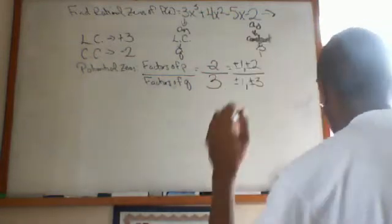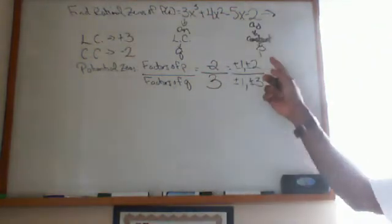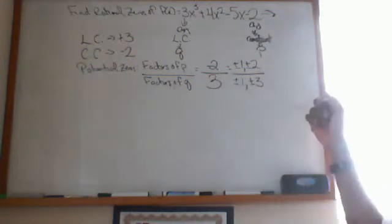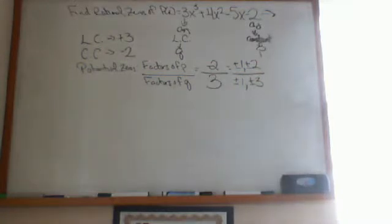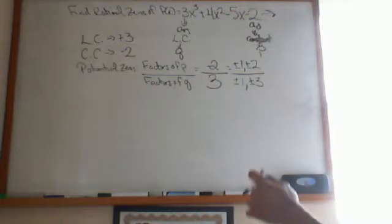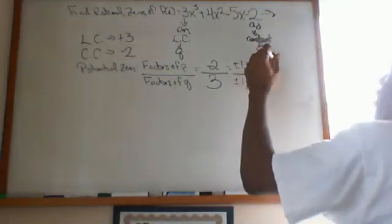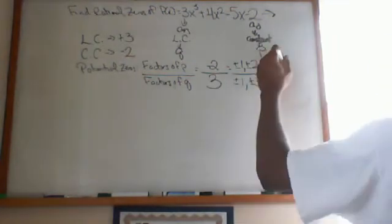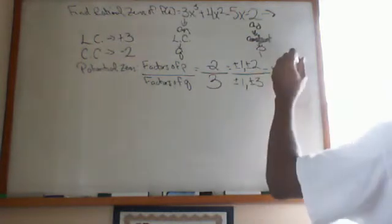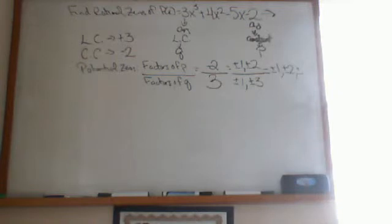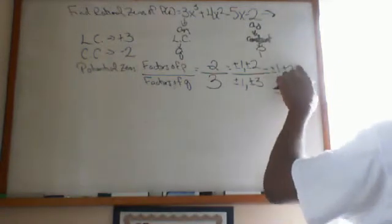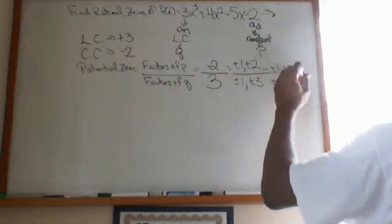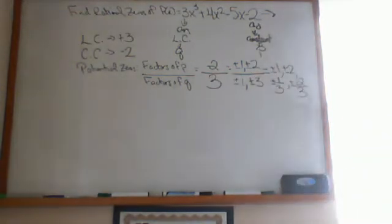So plus or minus 1 and plus or minus 3, all of my factors. So it looks like plus or minus 1, plus or minus 2 over plus or minus 1, plus or minus 3. Now when I divide them against each other, 1 divided by 1 is 1, so plus or minus 1; 2 divided by 1 is 2, plus or minus 2; 1 divided by 3 is plus or minus 1/3; 2 divided by 3 is 2/3. So two-thirds, which is really 0.66 repeating, right? So this is 0.33 repeating.